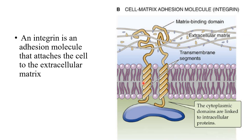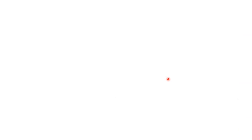Integrin is another example — an integral protein acting as a pillar. The protein name is integrin. It is an adhesion molecule that attaches the cell to the extracellular matrix. It is fixing the cell, helping in support like muscles. In some muscular diseases, if there is an abnormal type of integrin or abnormal cytoskeletal protein, they cannot support, and there is muscular disease.